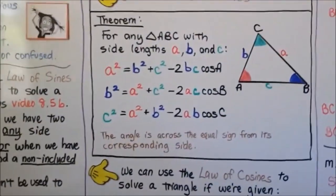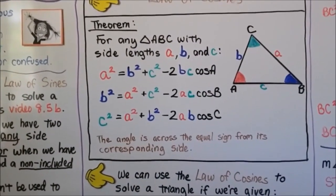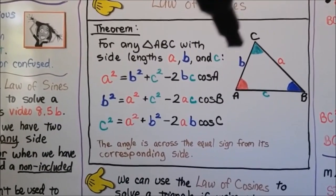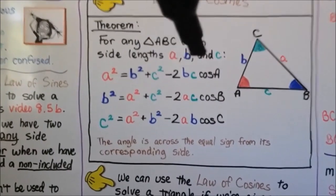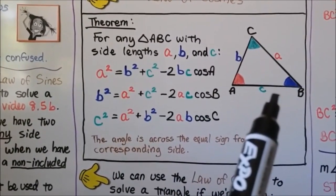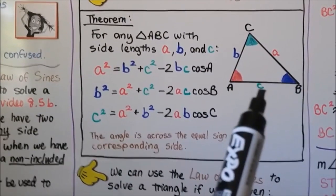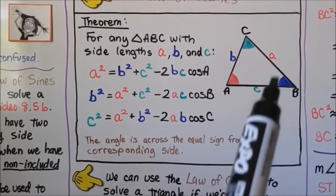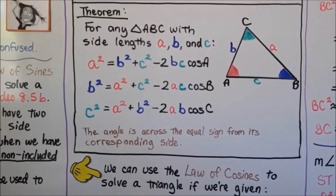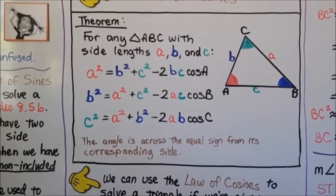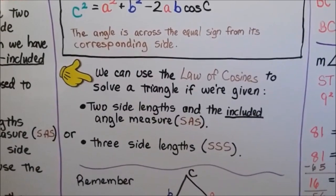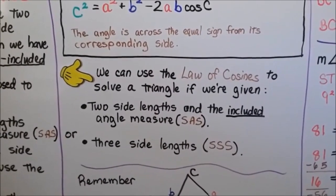Here is the theorem: for any triangle ABC with side lengths a, b, and c, we can write a squared equals b squared plus c squared minus 2 times b times c cosine of A. Similarly, c squared equals a squared plus b squared minus 2 times a times b cosine of C. The angle is across the equal sign from its corresponding side. We can use the law of cosines when given two side lengths and the included angle SAS, or three side lengths SSS.